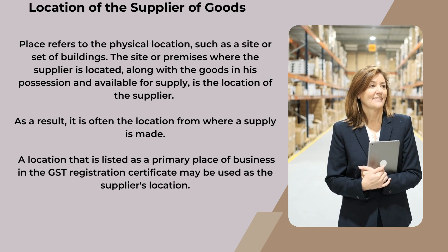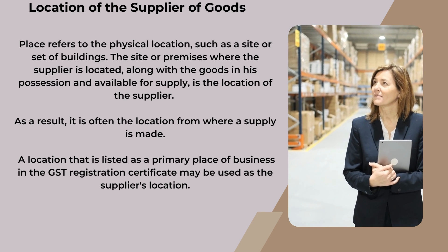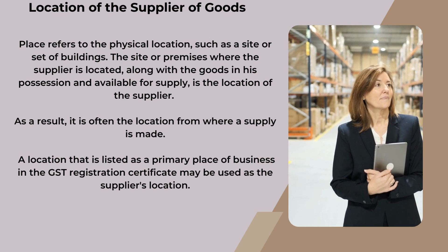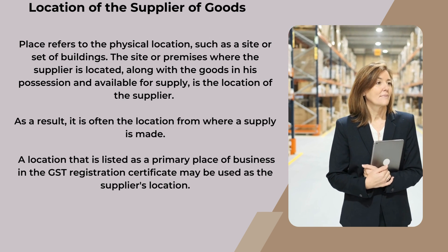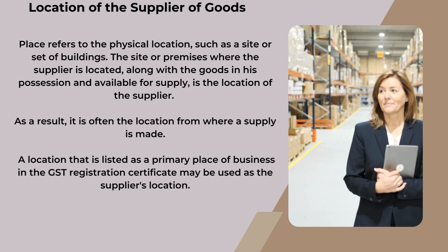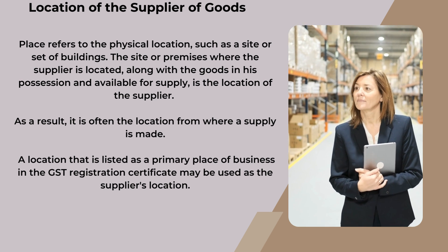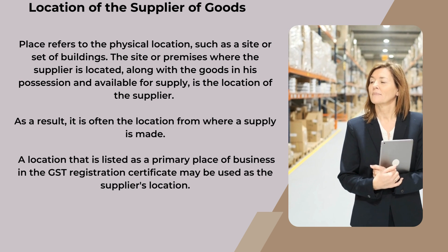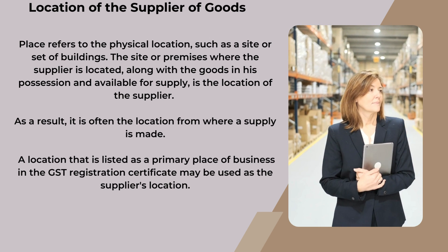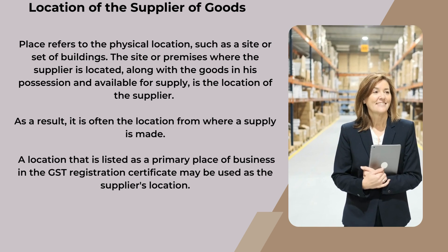Location of the Supplier of Goods: 'Place' refers to the physical location, such as a site or set of buildings. The site or premises where the supplier is located, along with the goods in his possession and available for supply, is the location of the supplier. It is often the location from where a supply is made. A location listed as a primary place of business in the GST registration certificate may be used as the supplier's location.